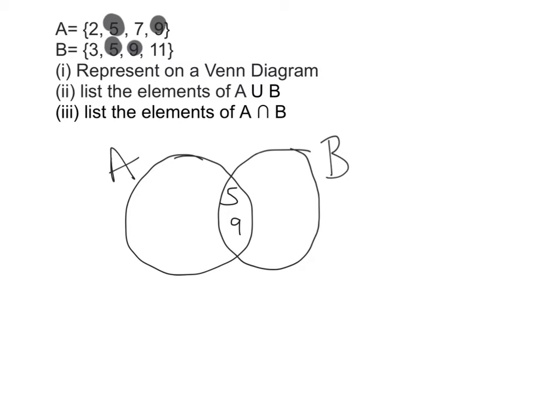Once you've filled in the middle section of your Venn diagram you need to fill in anything that's left over on the outside of A and everything that's left over on the outside of B. The number 2 and the number 7 need to be filled into A and the number 3 and the number 11 into B.